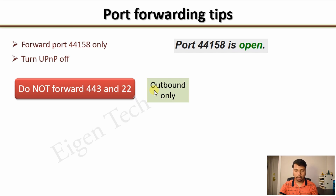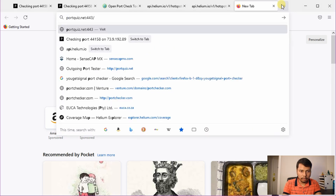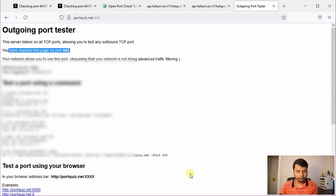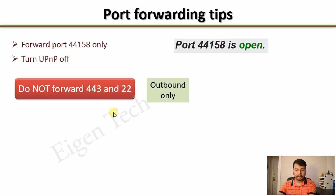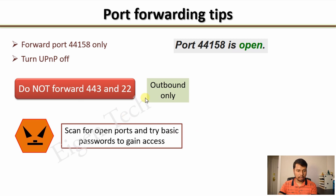If you want to verify outbound traffic, go to your browser and type portquiz.net:443 — it will show that you have reached the page on port 443, confirming outbound traffic is allowed. If you still port forward ports 443 and 22, there are plenty of botnets that scan for open ports and try basic passwords to gain access to your network, which is a security threat. Also, some routers require restarting for changes to be applied, so restart both your router and the hotspot after performing port forwarding.